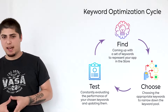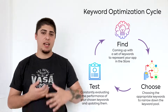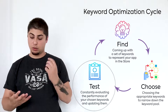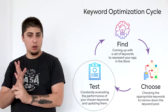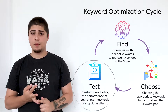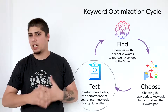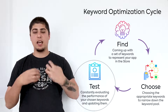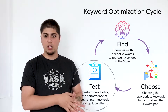The final step of the keyword optimization cycle is testing the keywords. So far you have found a list of keywords and chosen the ones you wanted to target, but it doesn't end there because you won't be magically starting to rank for them. You have to test and measure how you perform on each of these new keywords.